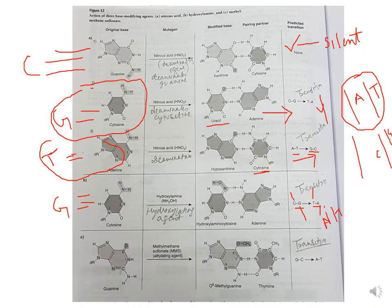This picture from Russell is a summarized form of all three base modifying agents. In this example, the original base guanine undergoes deamination by nitrous acid, resulting in xanthine. However, xanthine also bonds with cytosine, so although mutation has occurred, it will not be observed — it leads to a silent mutation because xanthine is still pairing with cytosine.